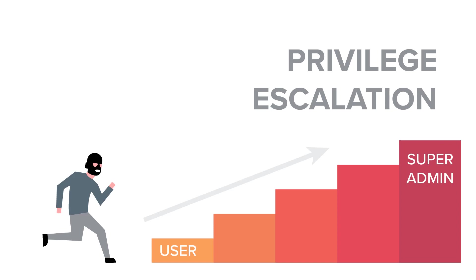Privilege escalation is a technique in which a normal user tries to gain higher authority access — higher privileges. In an operating system, a normal user has certain privileges. What that normal user does is try to exploit any vulnerable software using various methods, elevating their privilege to the root user's privilege. Trying to gain root user privilege is called privilege escalation.